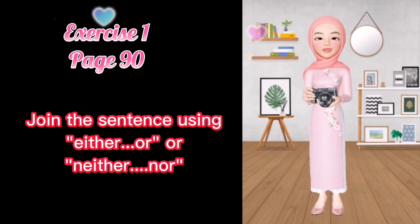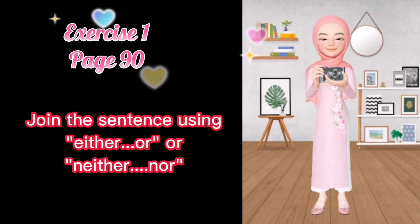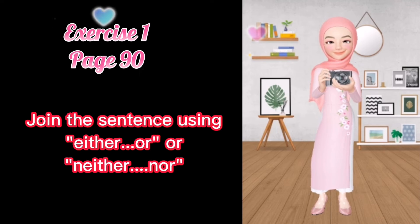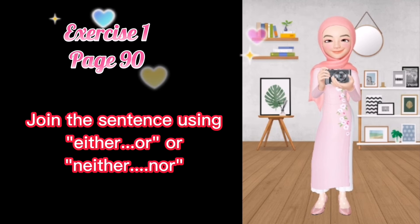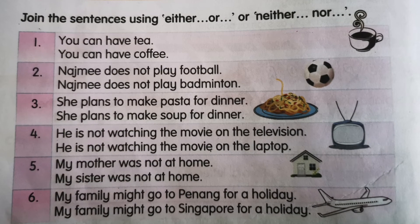Now let's do exercise one on page 90. Join the sentences using either...or and neither...nor.